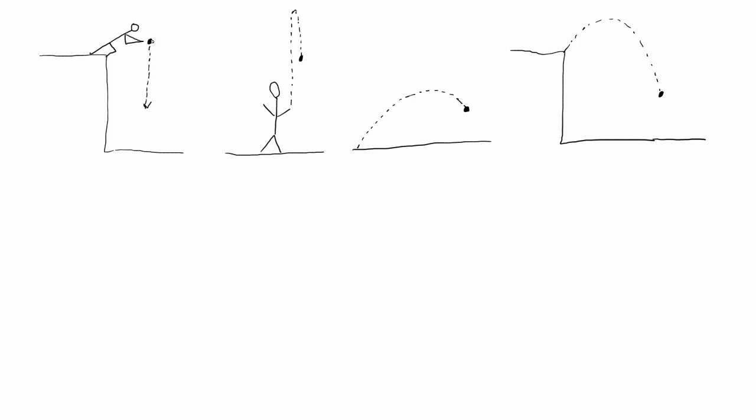For the first two examples where we just have vertical motion, the constant acceleration is the acceleration due to gravity, which is negative 9.81 meters per second squared if we consider the positive y direction to be up.